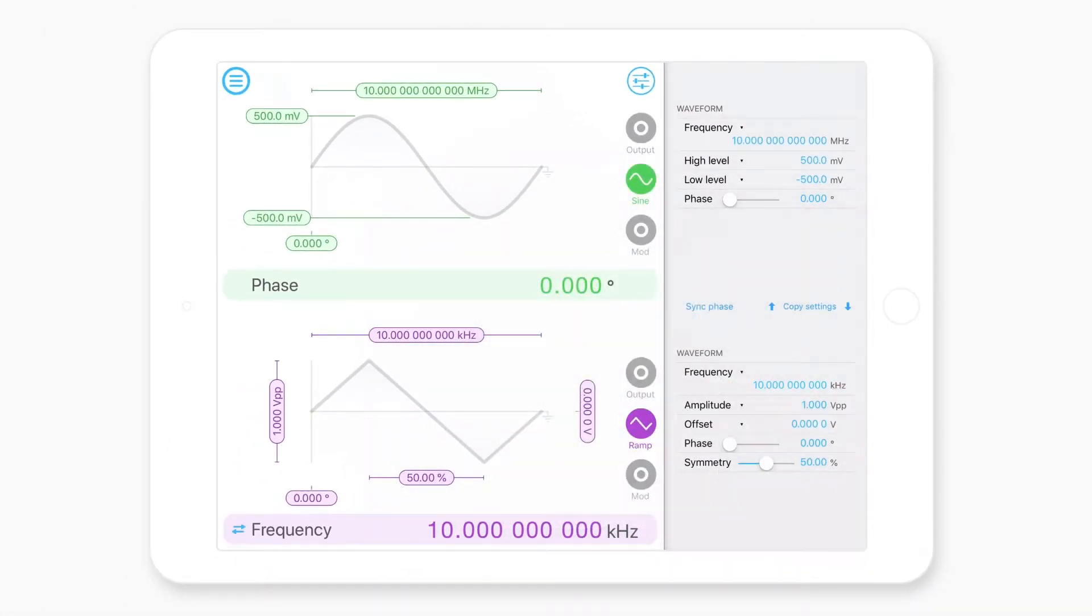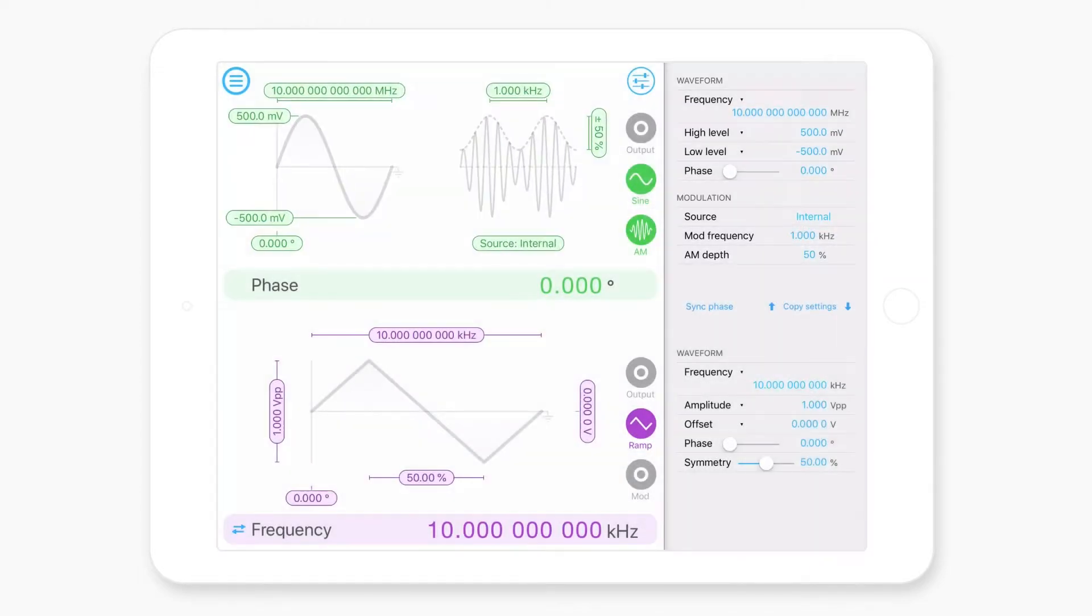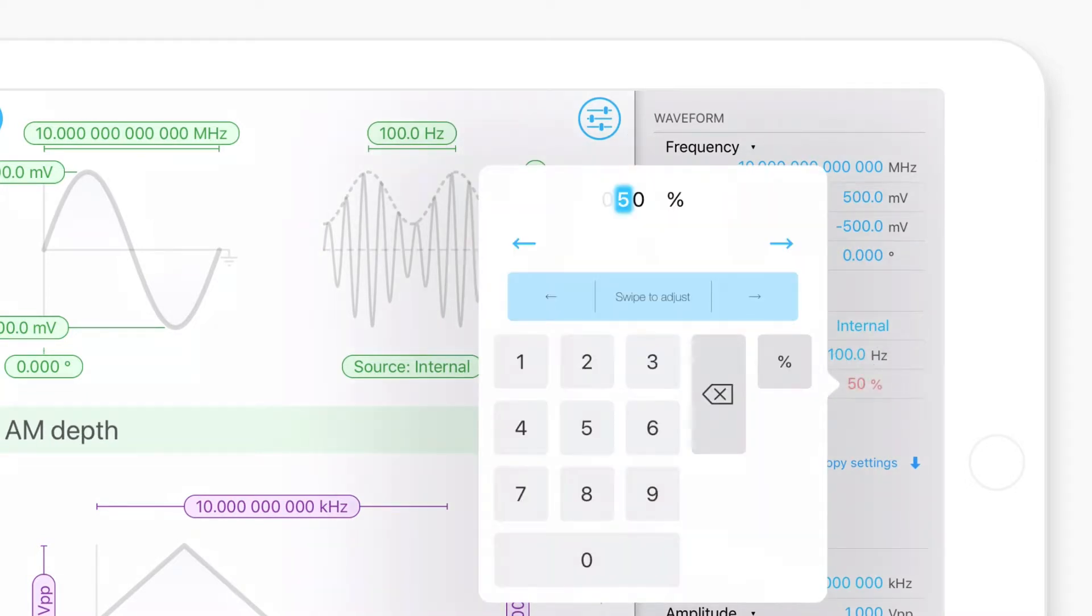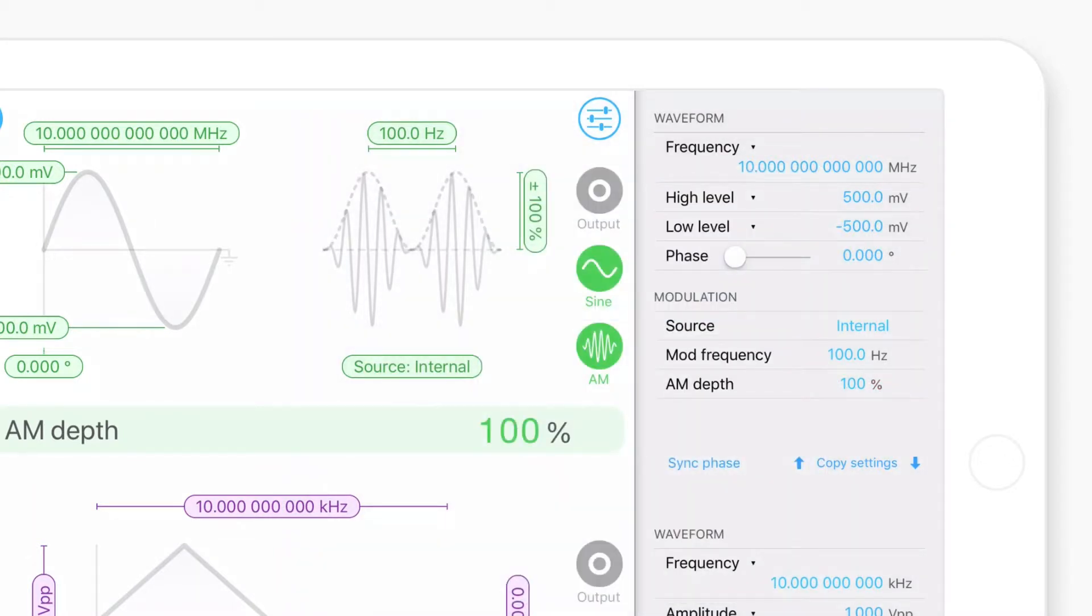So one of the really cool things about the Moku Labs waveform generator is the modulation modes. So if I want to apply an amplitude modulation to the output on channel one, I just select the amplitude modulation mode there, and then I can configure the modulation frequency. I can specify the amplitude of that modulation. So this is the modulation depth. But I can also specify the source. So at the moment it's configured to be modulating using an internal source. This is just a sine wave.